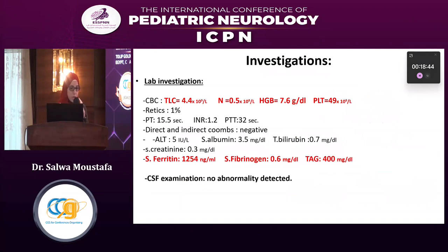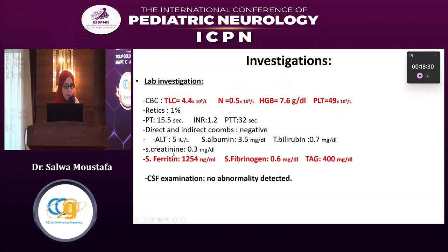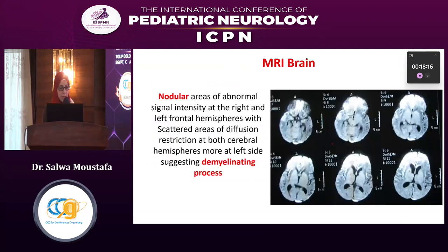Initial laboratory investigations were significant for marked neutropenia at 0.5, hemoglobin 7.6 normocytic normochromic, and platelets of 49 — indicating pancytopenia. Other investigations showed elevated serum ferritin, consumed fibrinogen at 0.6, and elevated triglycerides of 400. CSF examination showed no abnormality detected.